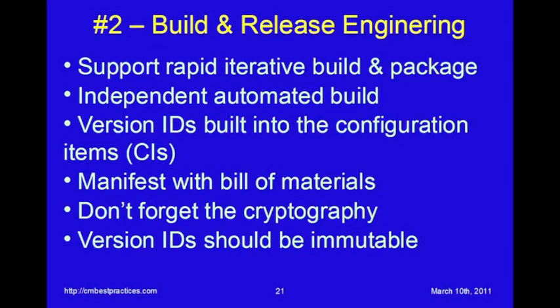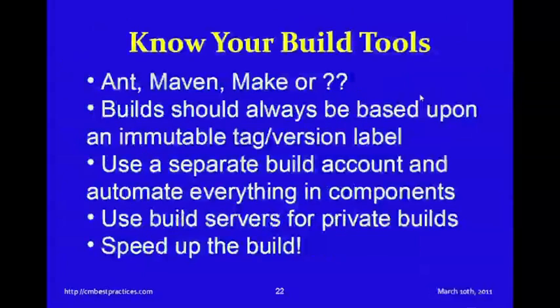Build and release engineering has a little more to it than just being able to compile your code. It's good to have a manifest with a full bill of materials, and the use of cryptography is becoming much more popular. In Maven, for example, you can write SHA-1 or MD5 — which are cryptographic hashes — and that gives you a great way to make sure nobody has tampered with a particular JAR or WAR file that you're deploying. And once again, version IDs have to be immutable: once you stamp an executable, you want to make sure that nobody can tamper with that.